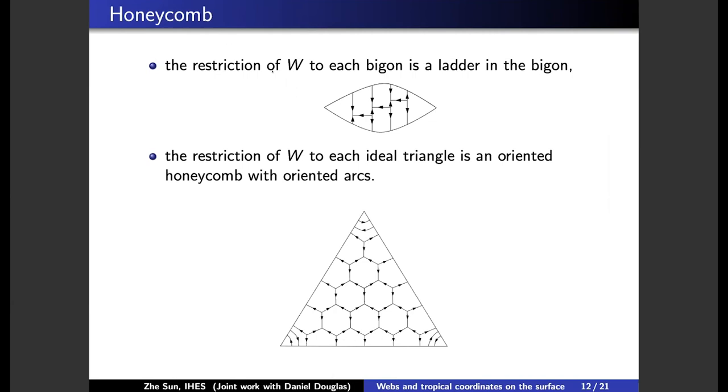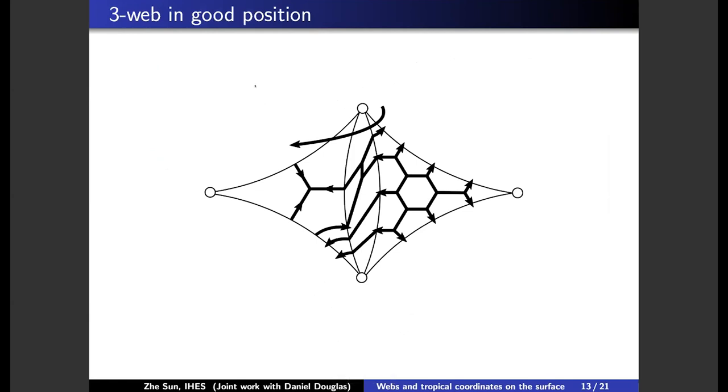And the restriction, the good position is that we push edges in this edge into the bigon and push this honeycomb into the triangles. And topologically, we can do that smoothly. So here is a picture in a square, how the picture looks like generally. In each triangle is a honeycomb with corner arcs. And in the middle is a ladder.